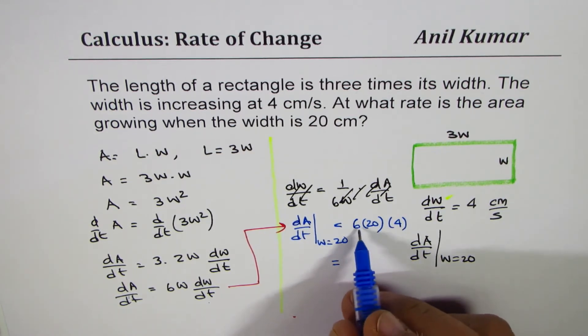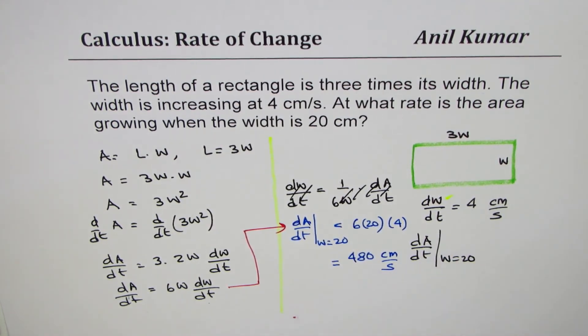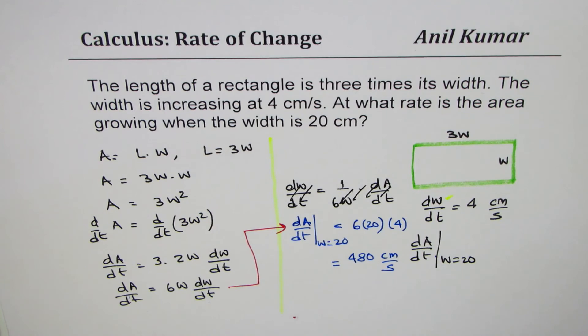480 centimeters per second - the units are centimeters per second. So we have to find dA/dt, we already have this expression, substitute the values and find your answer.